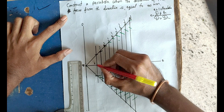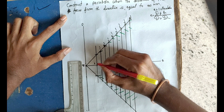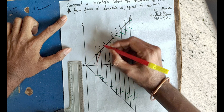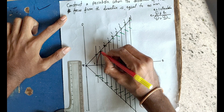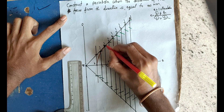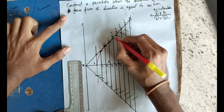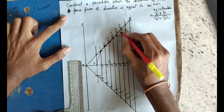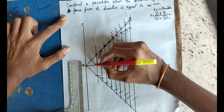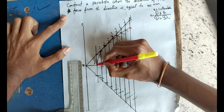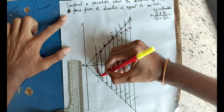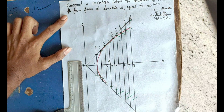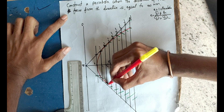After getting all the intersection points, join them with a smooth freehand curve. This gives us the parabola. Draw the curve passing through V and all the arc intersection points to complete the parabola construction.